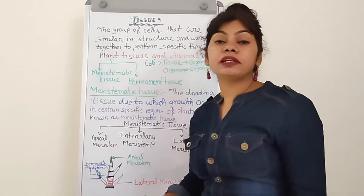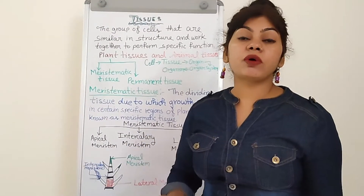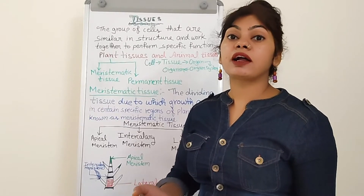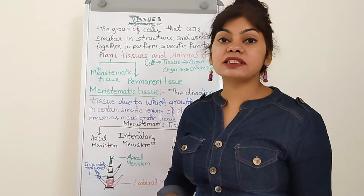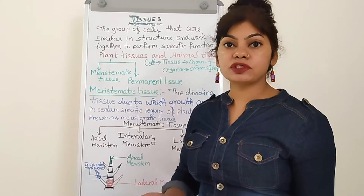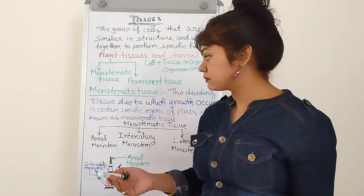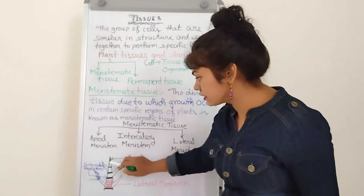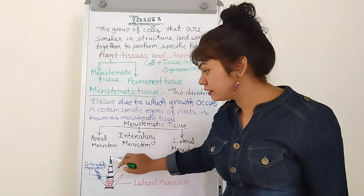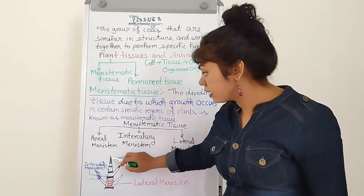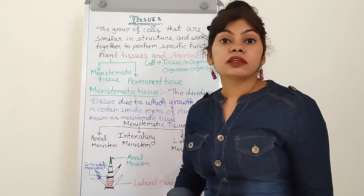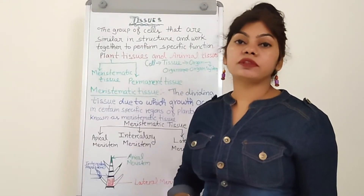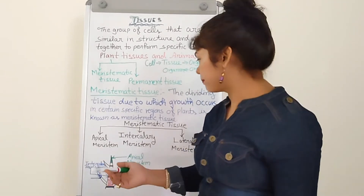Apical meristem is present always at the tip part of the plant — at the tip of the roots or stems. As you can see in the figure, the green region at the tip. It increases the length of the roots or the stem.